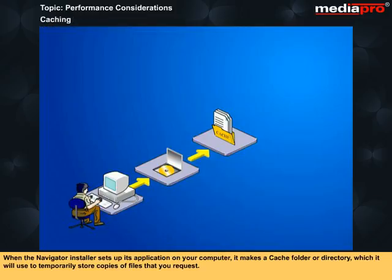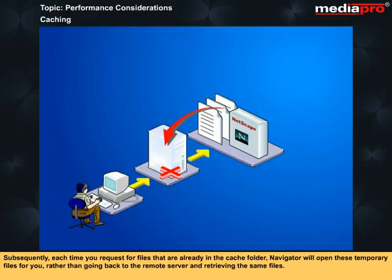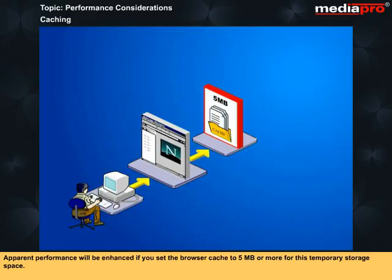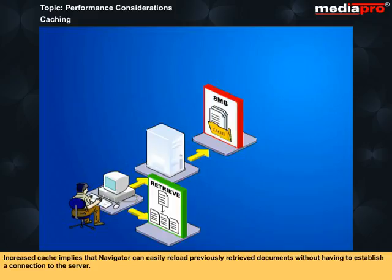When the Navigator installer sets up its application on your computer, it makes a cache folder or directory which it will use to temporarily store copies of files that you request. Subsequently, each time you request files that are already in the cache folder, Navigator will open these temporary files for you rather than going back to the remote server and retrieving the same files. This is caching. Apparent performance will be enhanced if you set the browser cache to 5 MB or more for this temporary storage space.